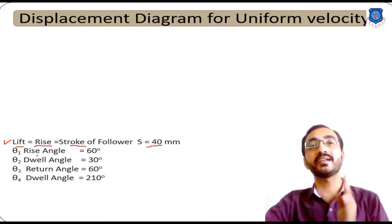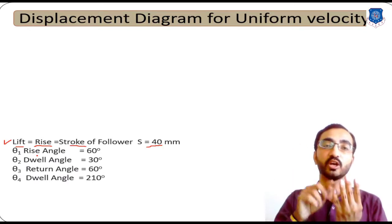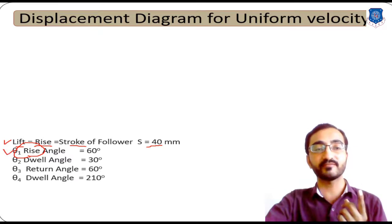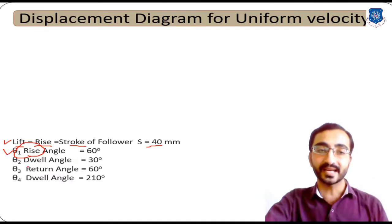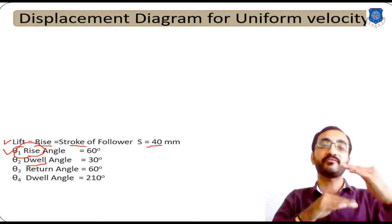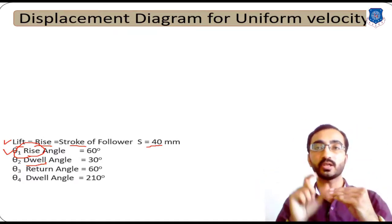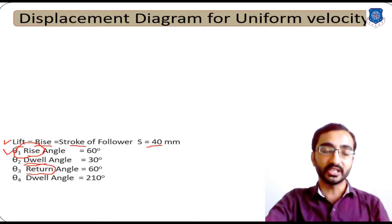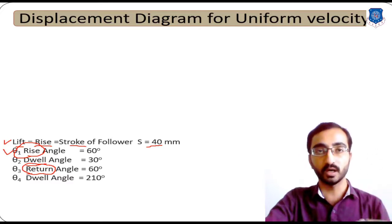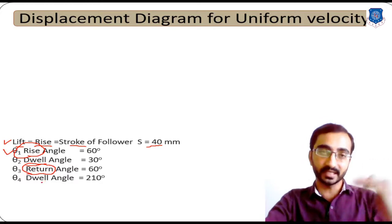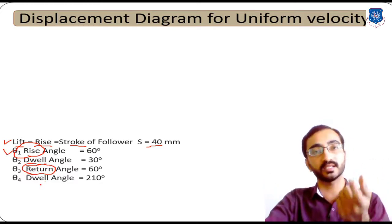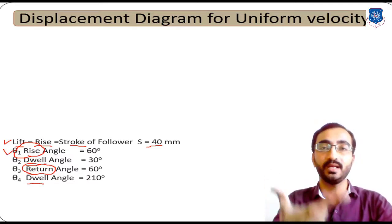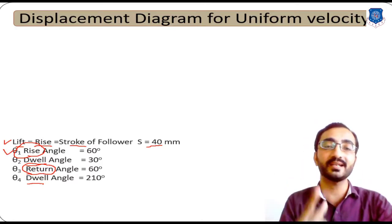The first phase is when the follower is moving in the upward direction — the rise angle (theta 1). The second phase is dwell: after reaching the maximum position, it remains there for a certain period. The third phase is return, where it moves back to its initial bottom-most position. The fourth is again a dwell. On the x-axis we plot the total angle of cam rotation — 360 degrees — using a scale of 20 degrees equal to 1 centimeter.